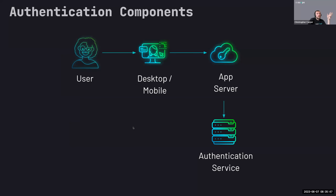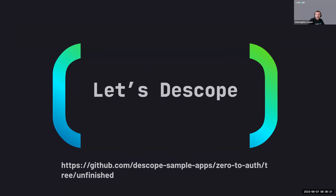We're going to be building out an application using this flow: you are the user using a desktop browser, it talks to your application, which talks to the authentication service — which is Dscope. We'll log in and sign up for Dscope, then step through the implementation. The steps to clone the repo and check out a specific branch are shared in the webinar chat, along with the NPM items you'll need.